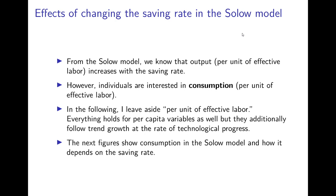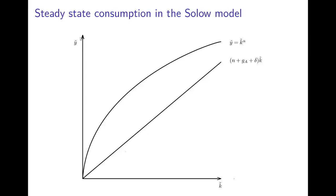The next few figures show how consumption in the Solow model changes when the saving rate changes. Here we first see the standard Solow diagram with output per unit of effective labor on the vertical axis and capital per unit of effective labor on the horizontal axis. We have the production function in intensive form and the capital depreciation and dilution line which starts at the origin and increases linearly. N is the population growth rate, GA the rate of technological progress, and delta the depreciation rate. With a low saving rate S1, the gross investment curve intersects the capital depreciation and dilution curve at a rather low level of capital per unit of effective labor.